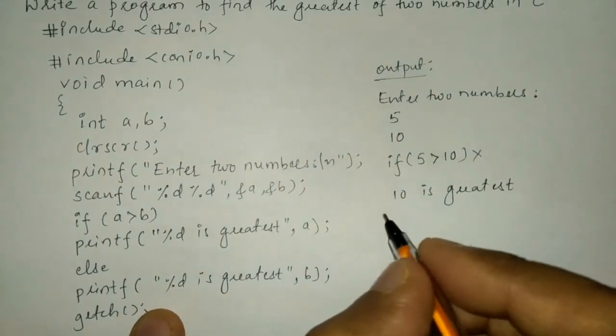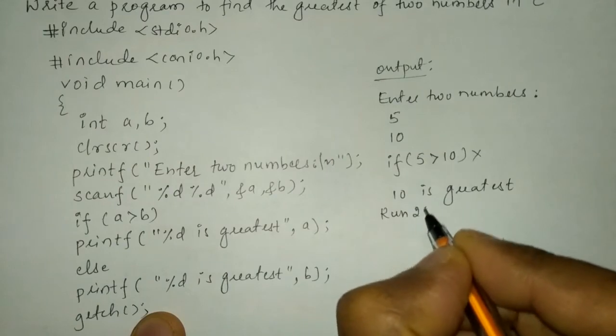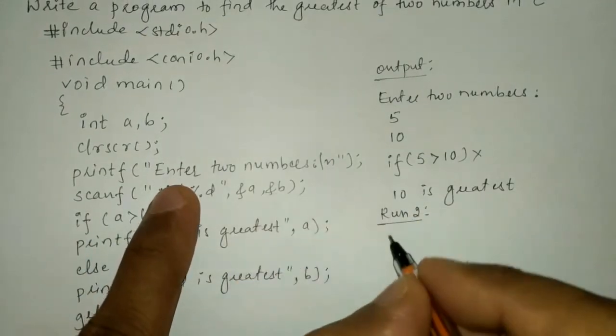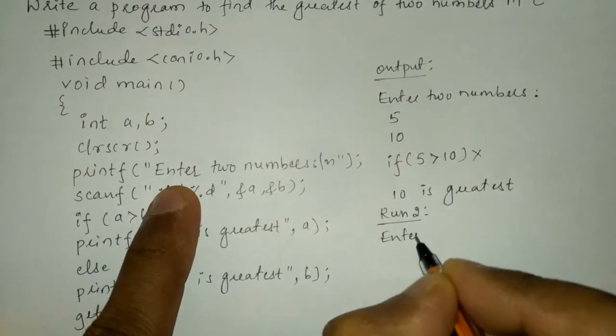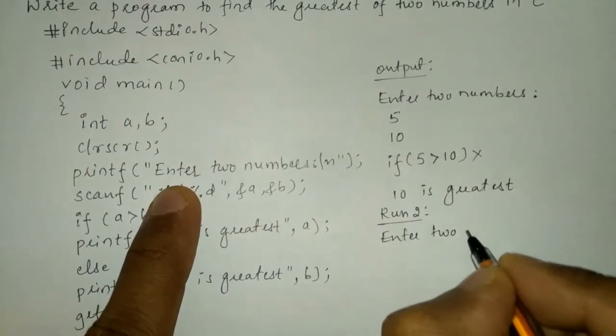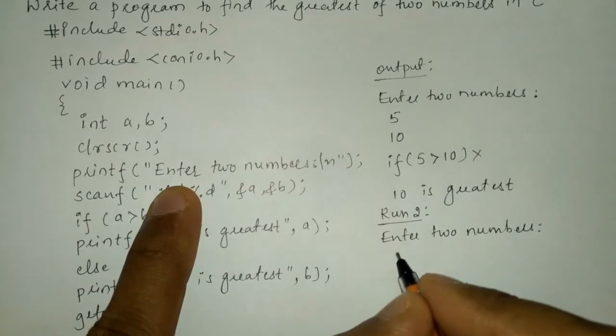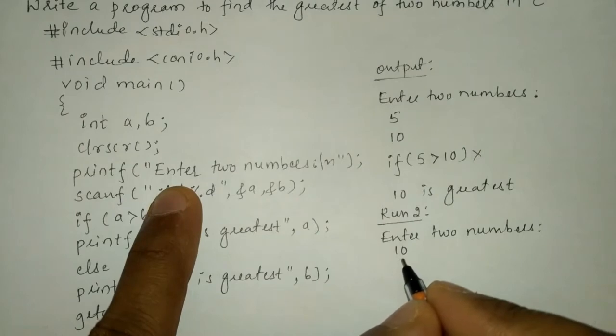Let us take one more run. So we will write run two. Now once again it will ask the user to enter two numbers. Here I am going to interchange the numbers. Now 10 and the second number is 5.